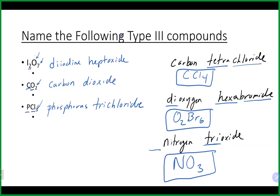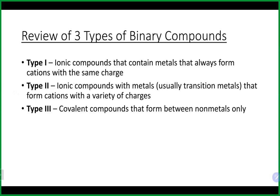For Type 3, the order of naming follows the order in the formula — whichever element comes first in the formula is named first, and vice versa. Quick review: Type 1 is metal/non-metal, no Roman numeral needed. Type 2 is metal/non-metal, Roman numeral needed because of variable metal charge. Type 3 is non-metals only, uses prefixes only. These never cross over — don't use both prefixes and Roman numerals at the same time.